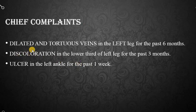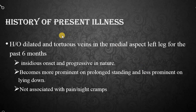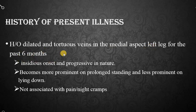The chief complaint will be dilated and tortuous veins in the limb, which is mainly cosmetic, and there may be discoloration of the limb due to complications or there may be a venous ulcer. In the history of presenting illness, the patient was apparently normal before 6 months and then developed dilated and tortuous veins in the medial aspect of the leg.